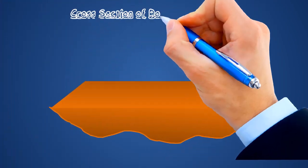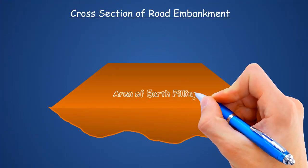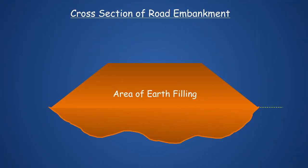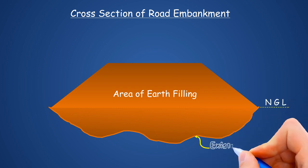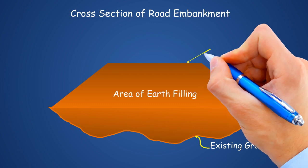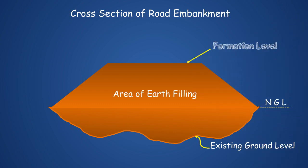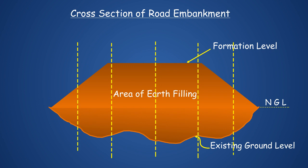Now we will see about the cross-section. The purpose of the cross-sectional levels is to calculate the cross-sectional area of the road at any particular chainage. By using this cross-sectional area, the quantity of earth filling is calculated in the road embankment. The levels are taken one at the center of the road, and at every 2.5 to 3.5 meter intervals at both sides from the center line of the road.